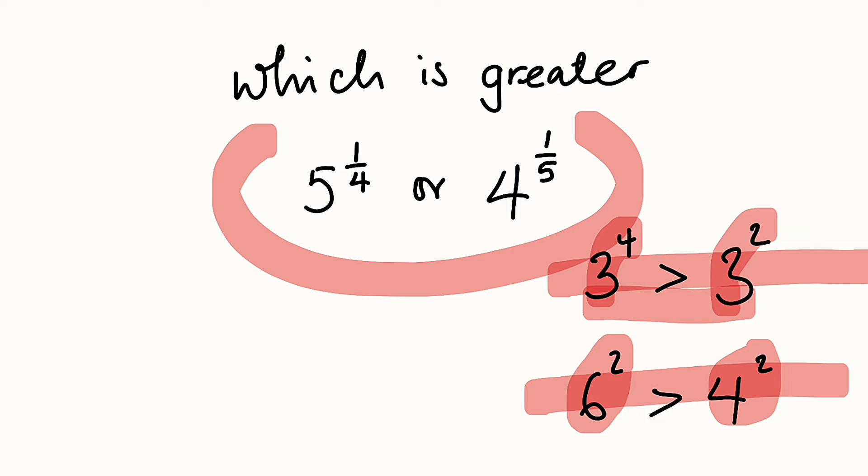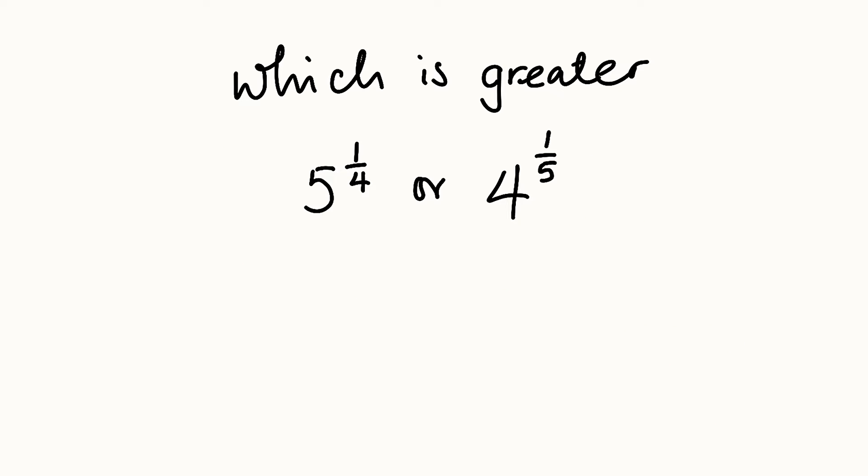Let's get started. What you need to do here is to ensure that exponents are exactly the same. So we have 5 to the power of 1 over 4, or 4 to the power of 1 over 5.